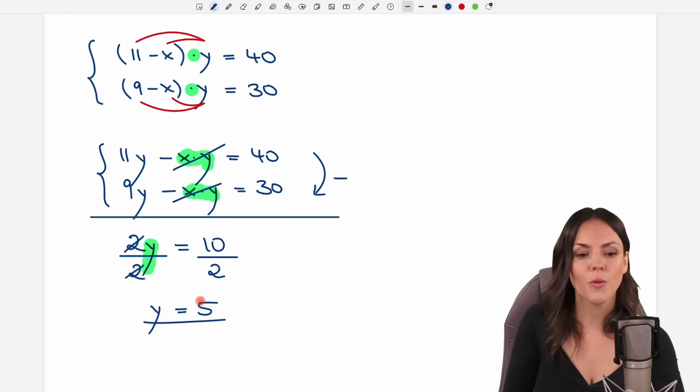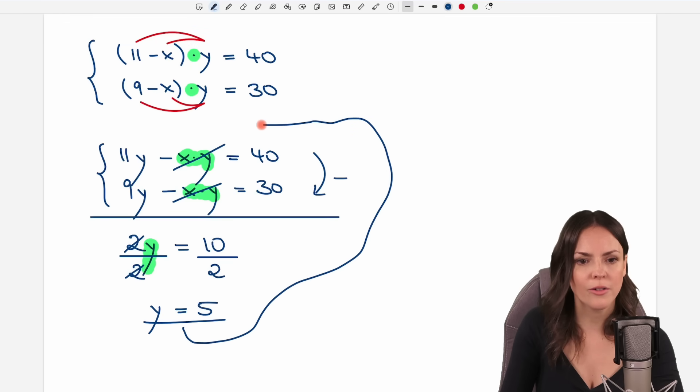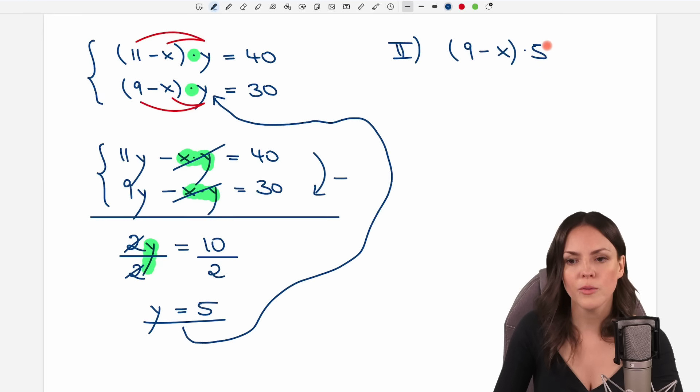We found the value for y but we also needed the value for x so we can use this value now and insert it anywhere we want to. Let's just pick this equation here. So the second equation where we have 9 minus x that we want to find. This time we multiply it by 5. We know that y equals 5 and this equals 30.